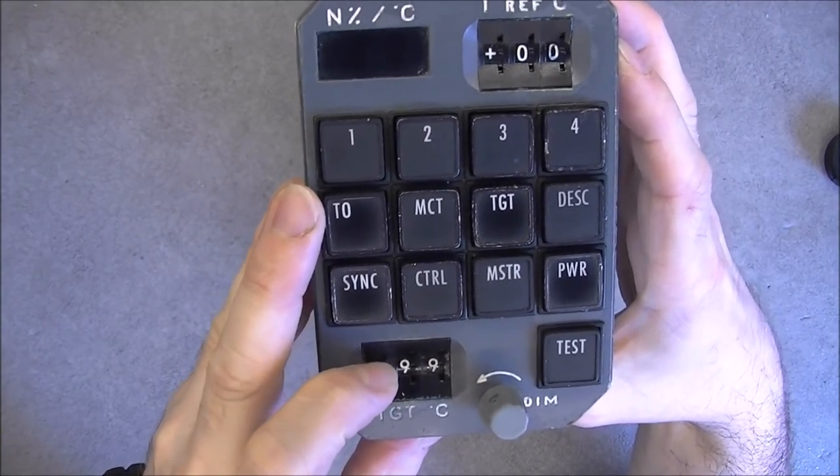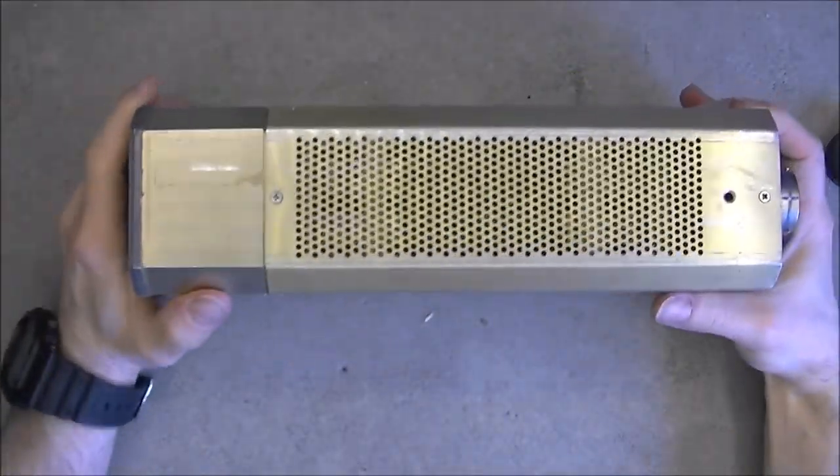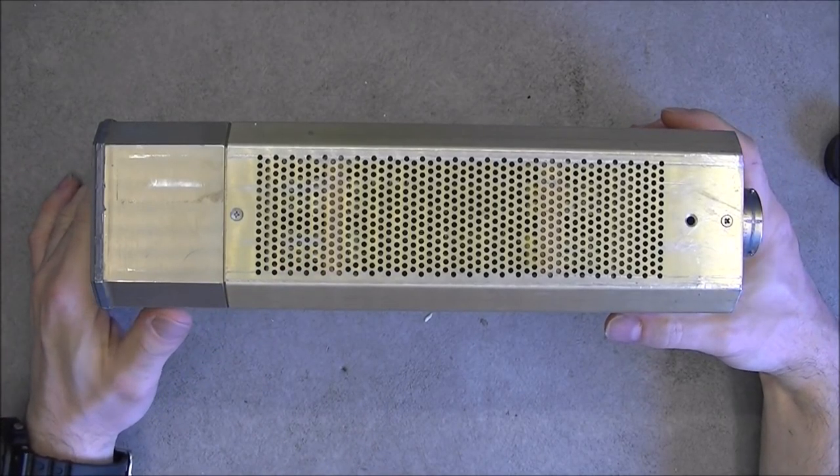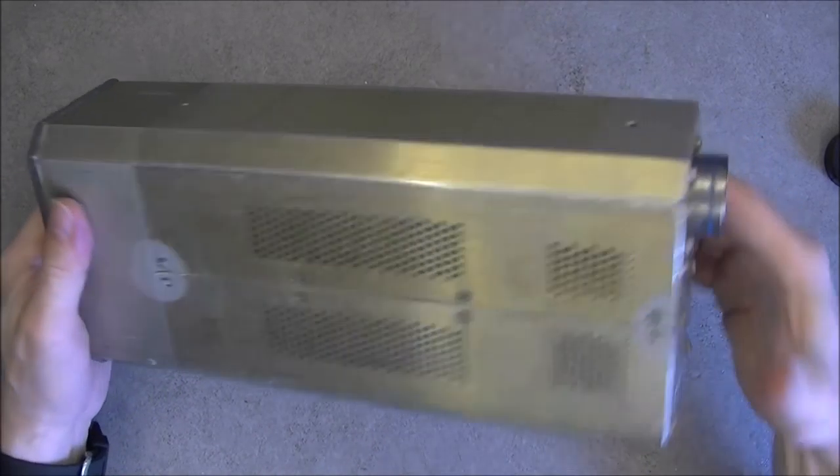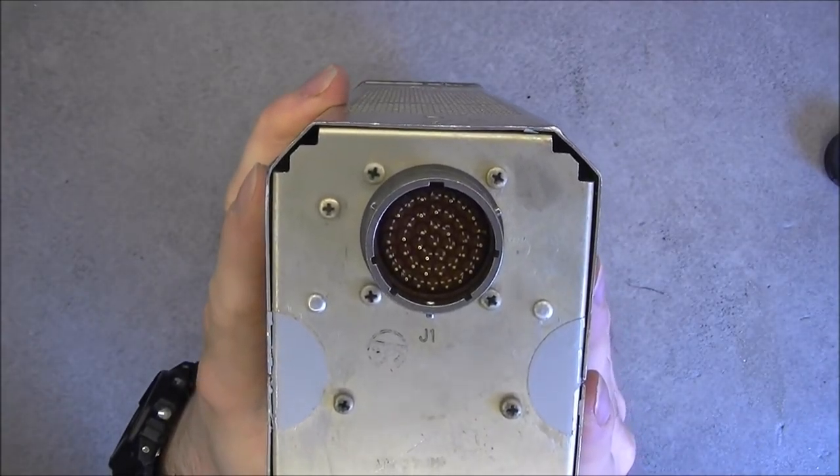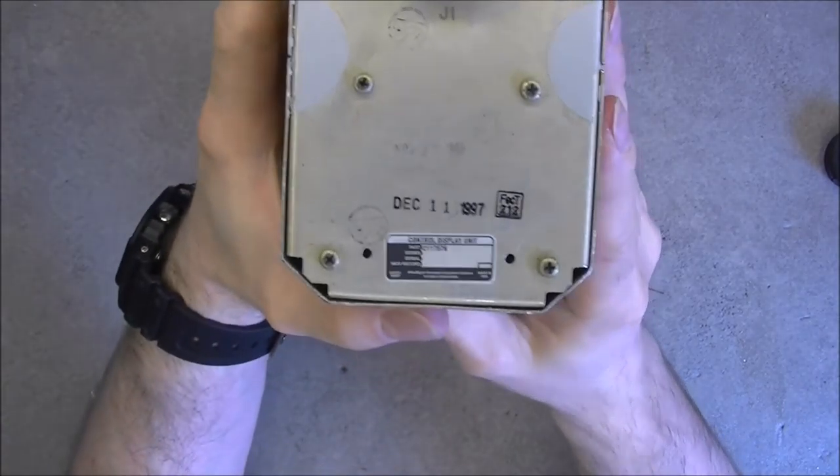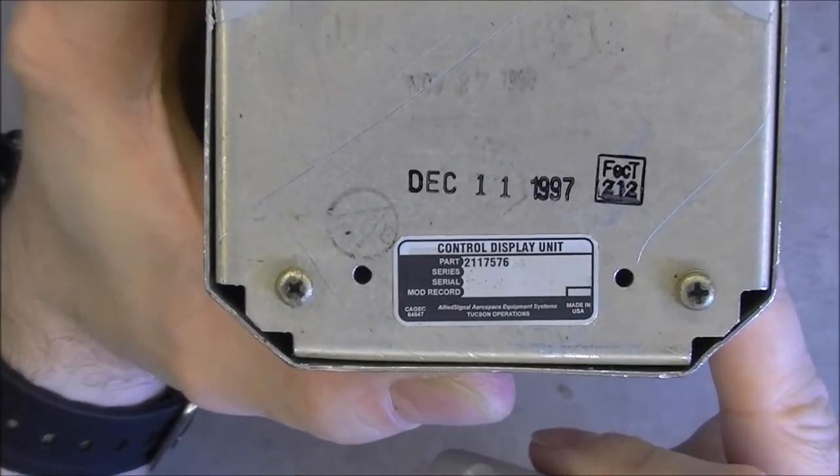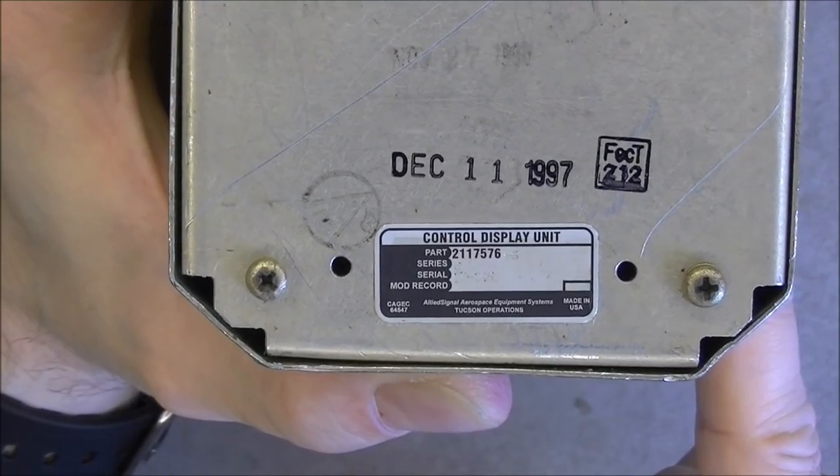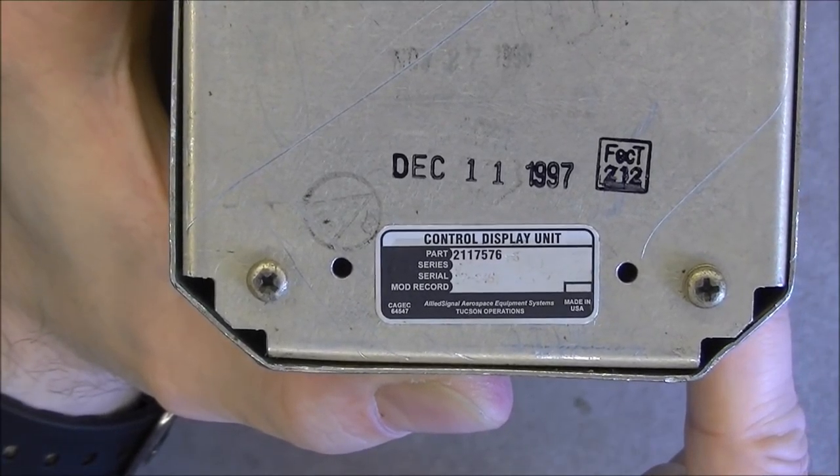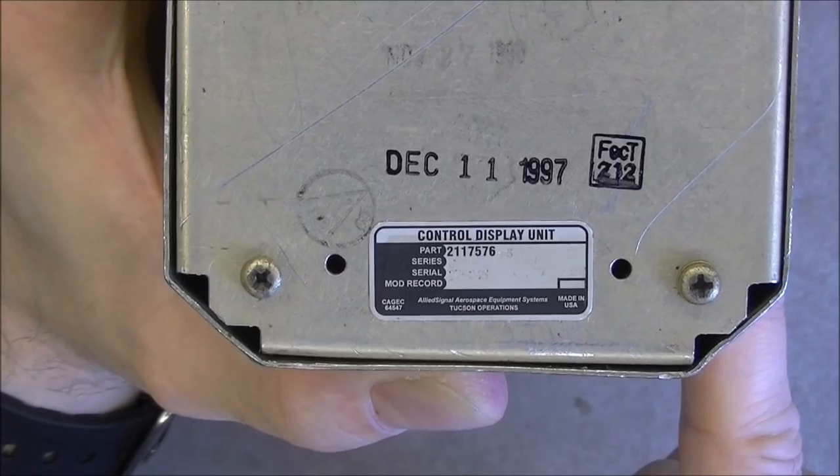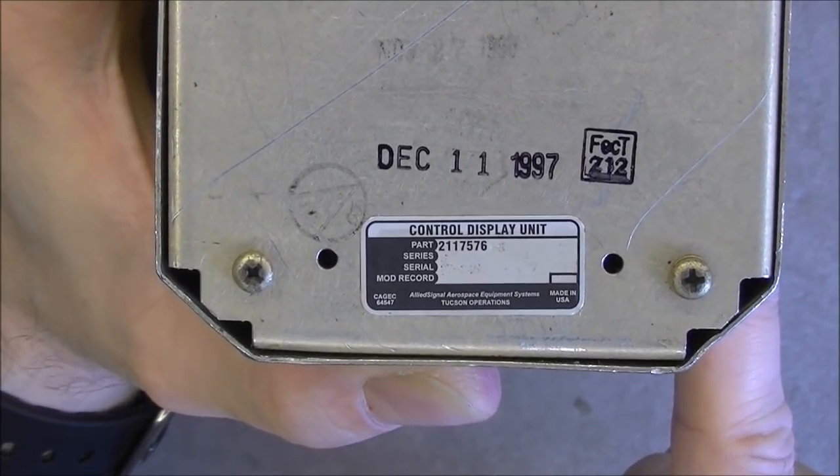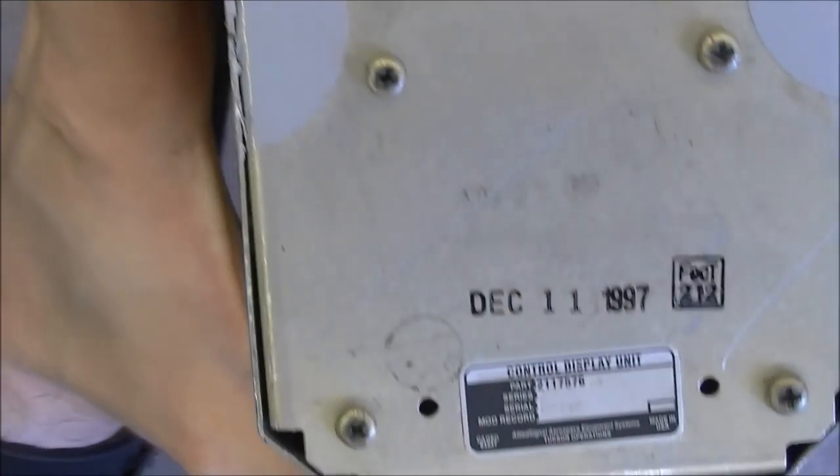The body is pretty long, almost 30 centimeters, with a lot of cooling holes, a lot of screws on the rear. One big connector and the manufacturer label. As you can see, made in 1997. Control display unit by Allied Signal Aerospace Equipment Systems Tucson Operations. And here is the part number for you.